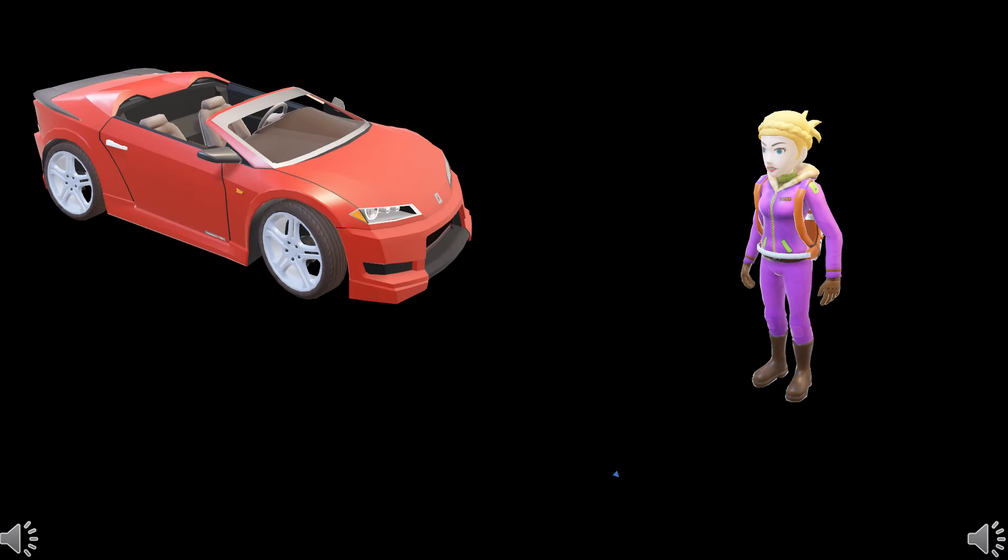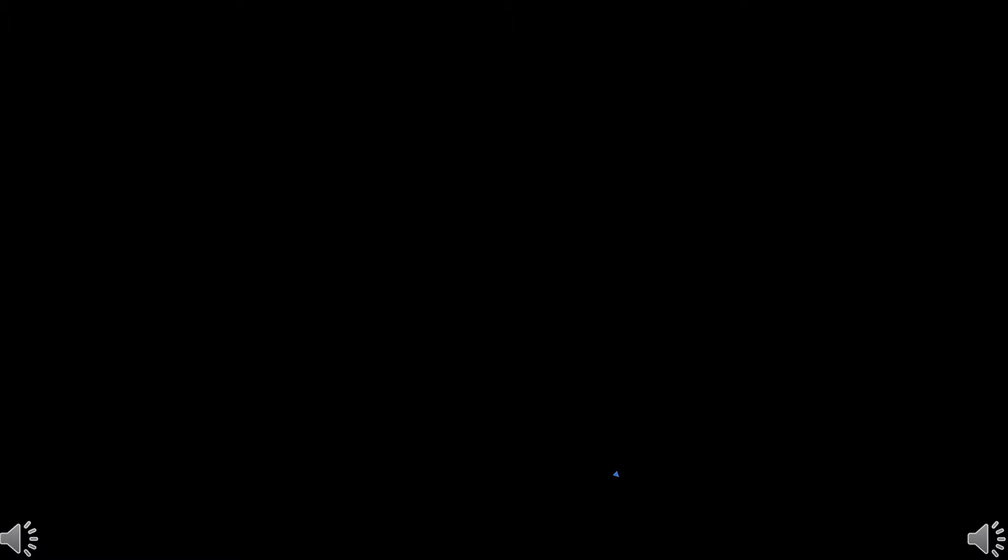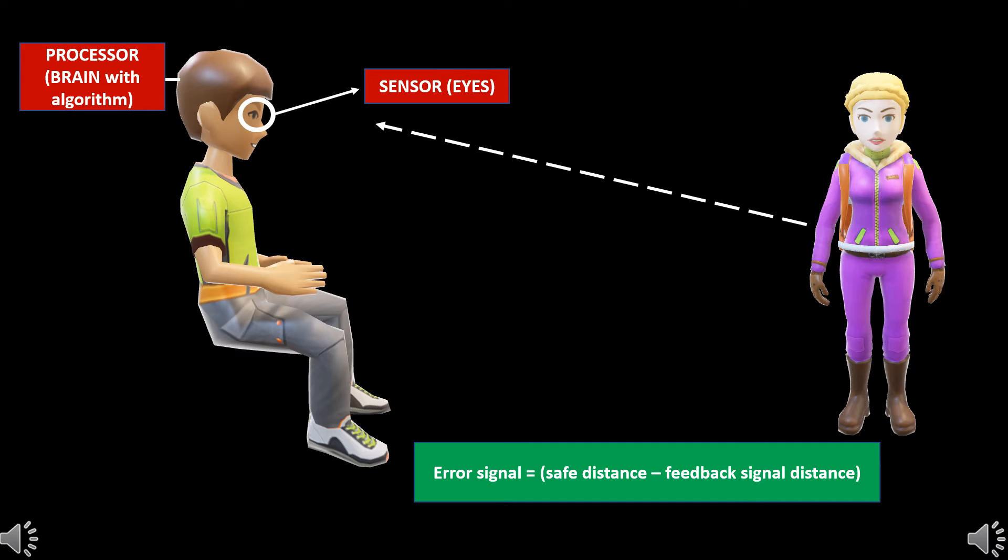To understand in simple terms, let us consider this situation: when you are driving a car and see a person in front of your car, the eyes which are the sensors detect the object in front and the distance from the object. This signal is sent to your brain which is the processor. Based on the difference between the safe distance and the input signal distance, the brain decides which path to take or to apply brakes.